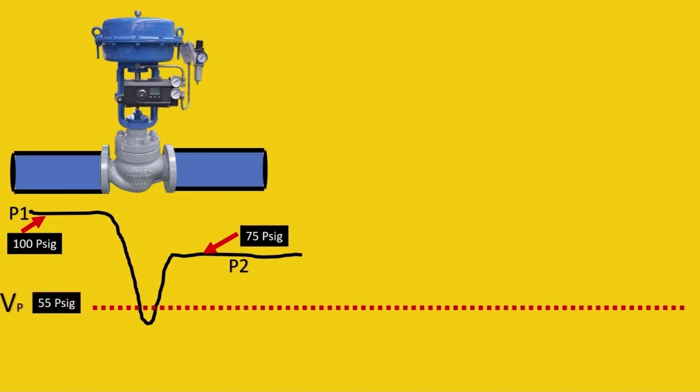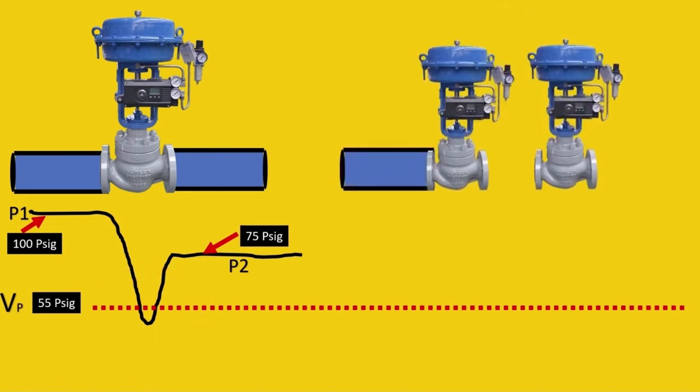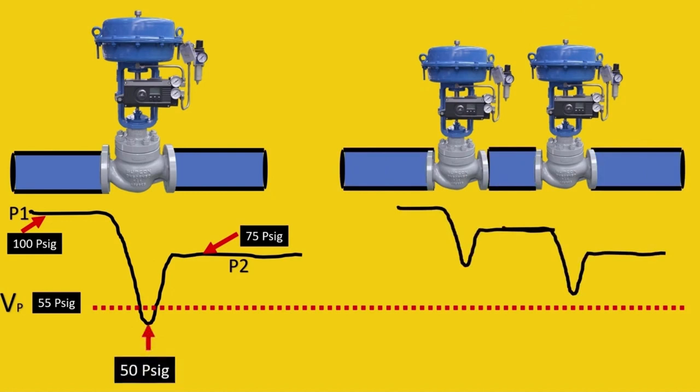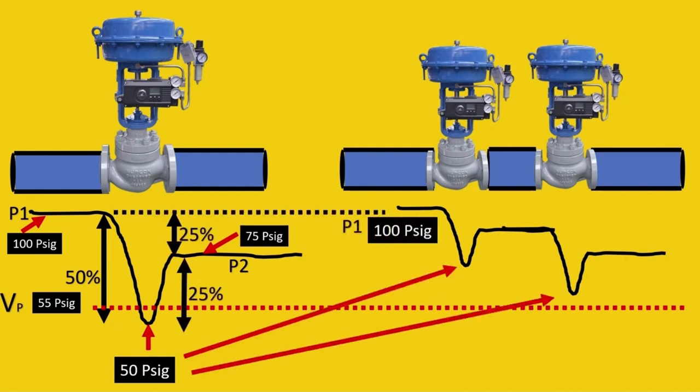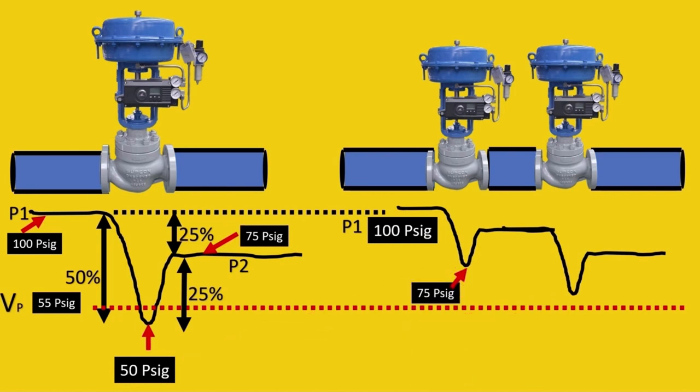Let the vapor pressure be 55 psig, so the curve goes below vapor pressure and cavitation happens. Now we try two valves in series with smaller pressure drops. The first valve has a 50 psig drop, with 25 psig recovery and 25 lost. Here P1 is 100 psig, the drop is divided so it's 75 psig, recovery is 12.5, giving 87.5 psig. The second drop of 25 brings it to 62.5 psig, then recovery to 75 psig.